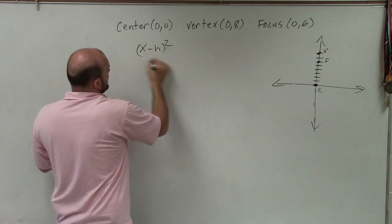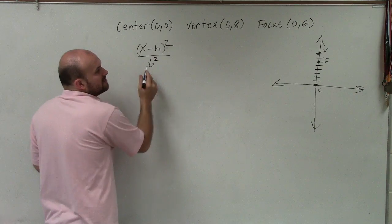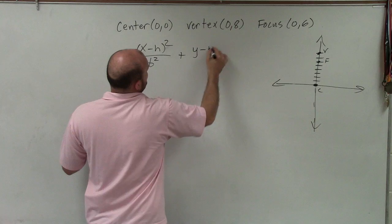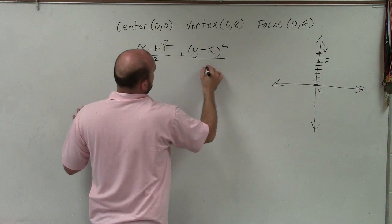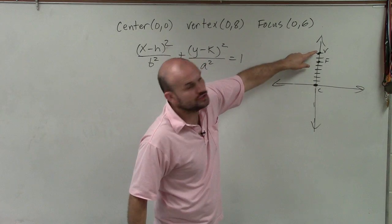(x - h)² over b², where b represents the distance from the center to your co-vertices, which we don't have, plus (y - k)² all over a², where a represents the distance from the center to both vertices.